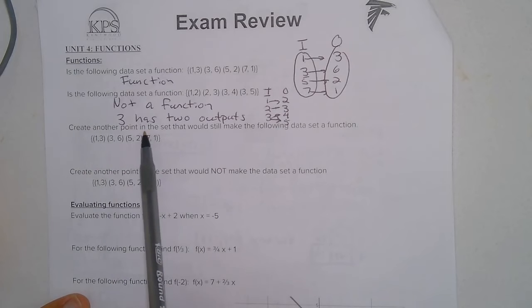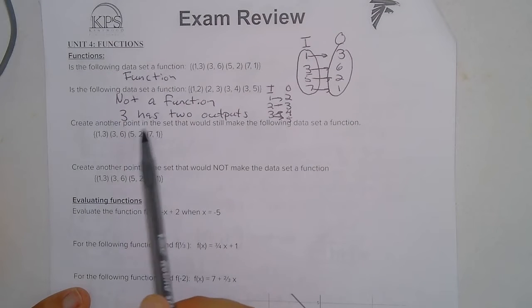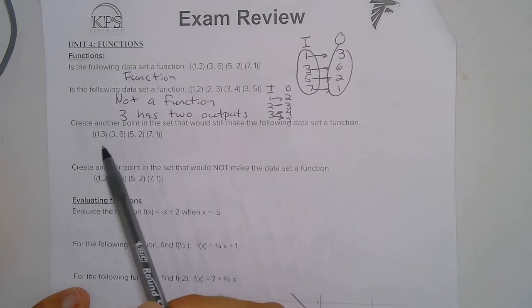So now here we have to create a point so that we would still have a function. So here this set is a function. So what I'm going to do is just create another input.